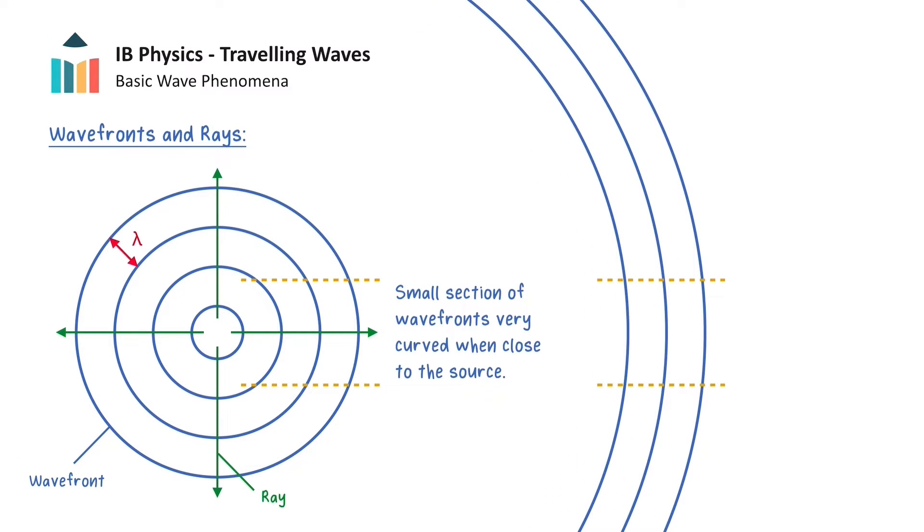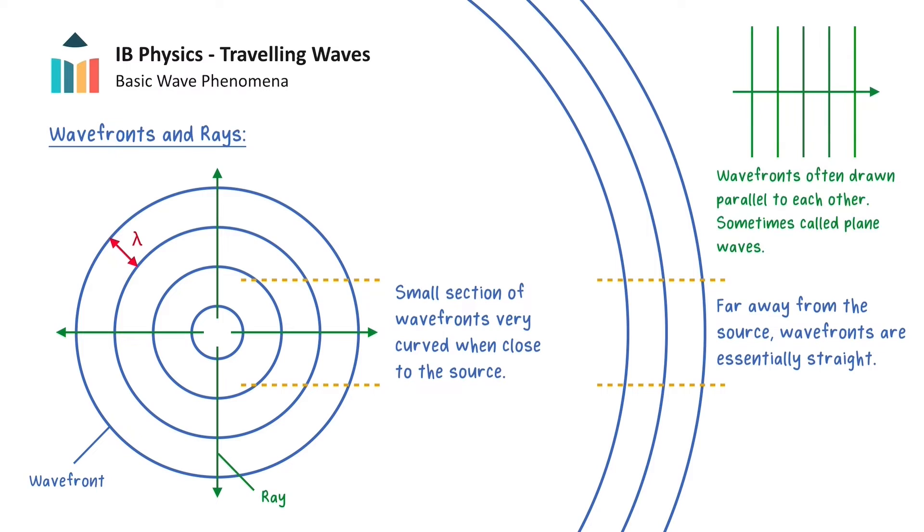But if we now consider an equal-sized section of the wavefronts far away from the source, the wavefronts look nearly straight. This is why wavefronts are often drawn parallel to each other when representing waves, because it is assumed that the source of the waves is at a far away distance such that the wavefronts are essentially straight, which are also sometimes called plane waves.